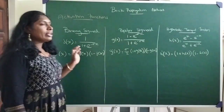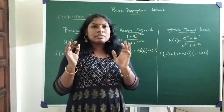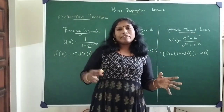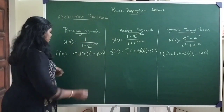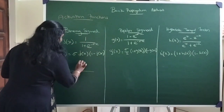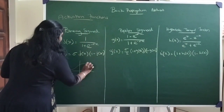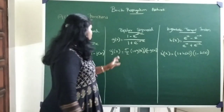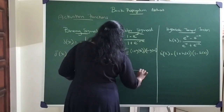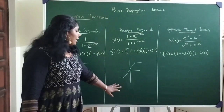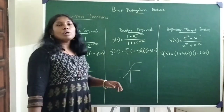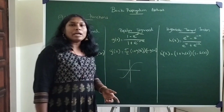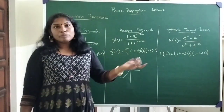The binary sigmoidal activation function is used when the input deals with values between zero and one — not negative values. We go ahead with this binary sigmoidal activation function, which acts only between zero and one. A bipolar function will cover negative values as well. Based on the input pattern and the output needed, we decide which activation function is more suitable for the given dataset.